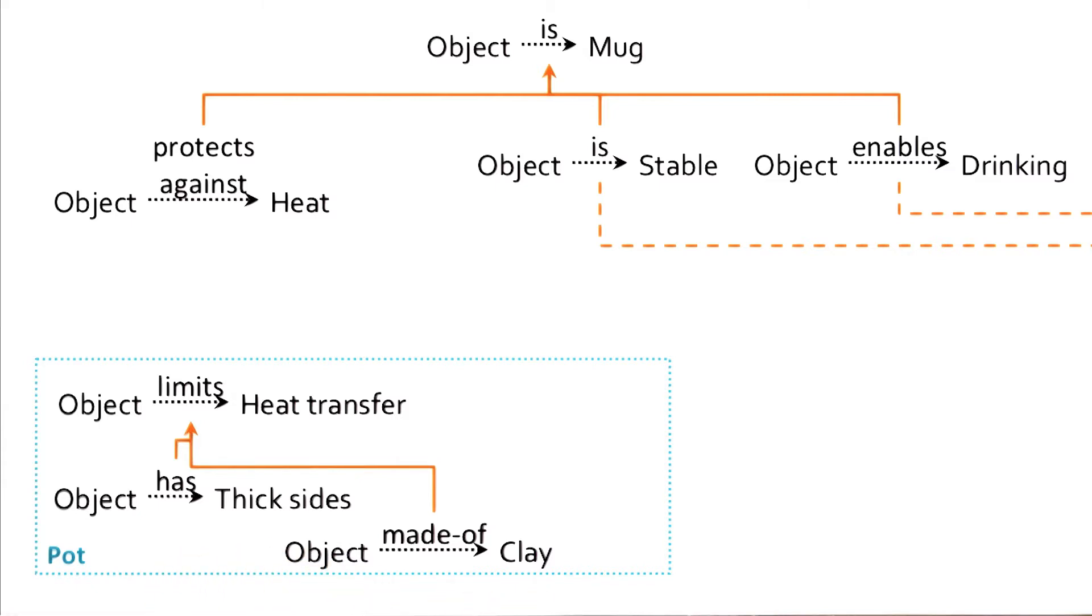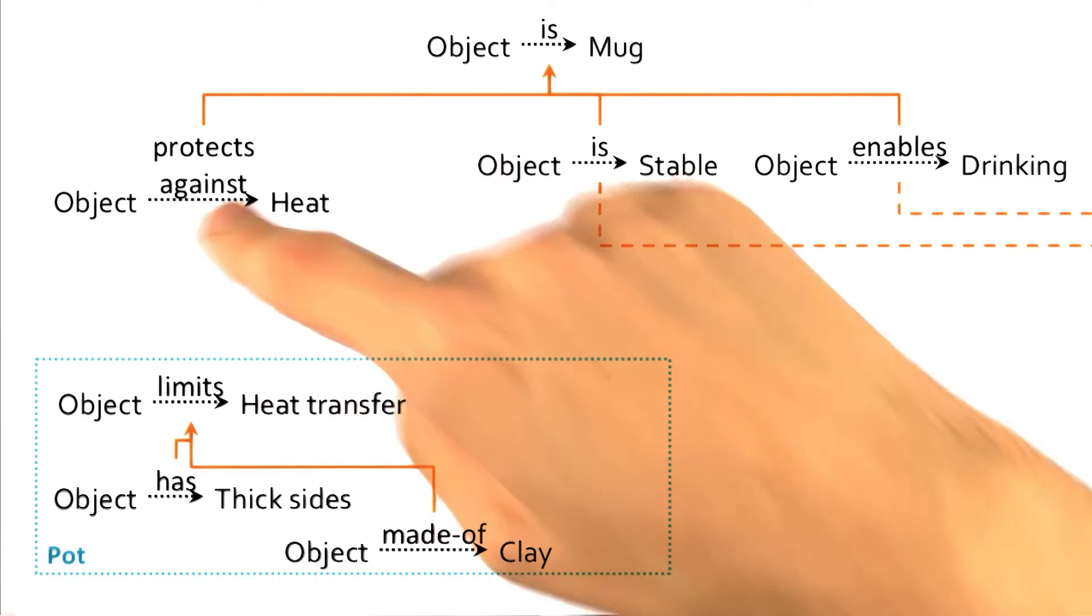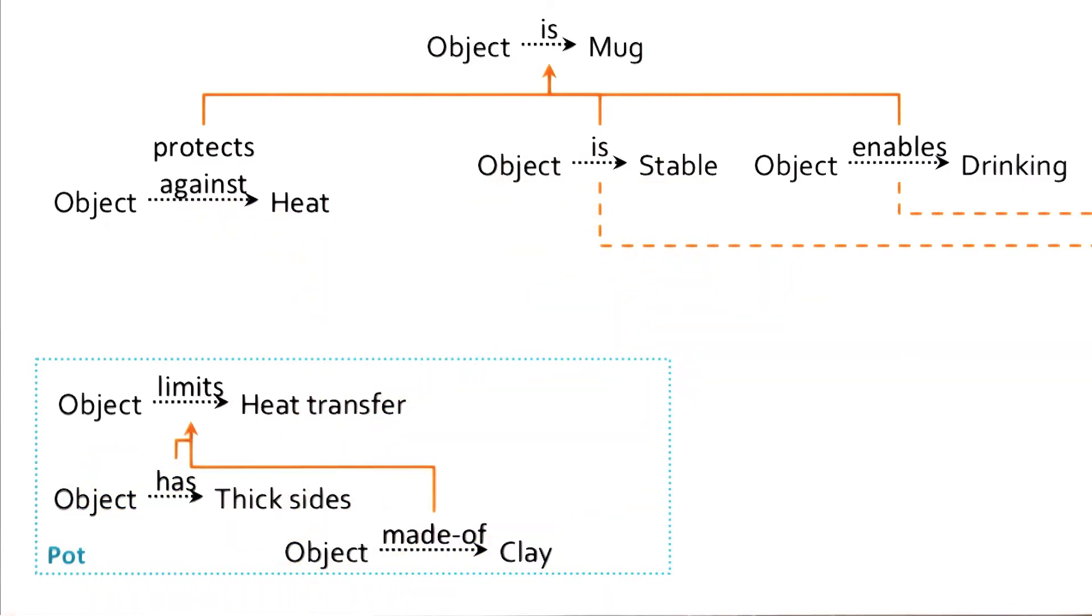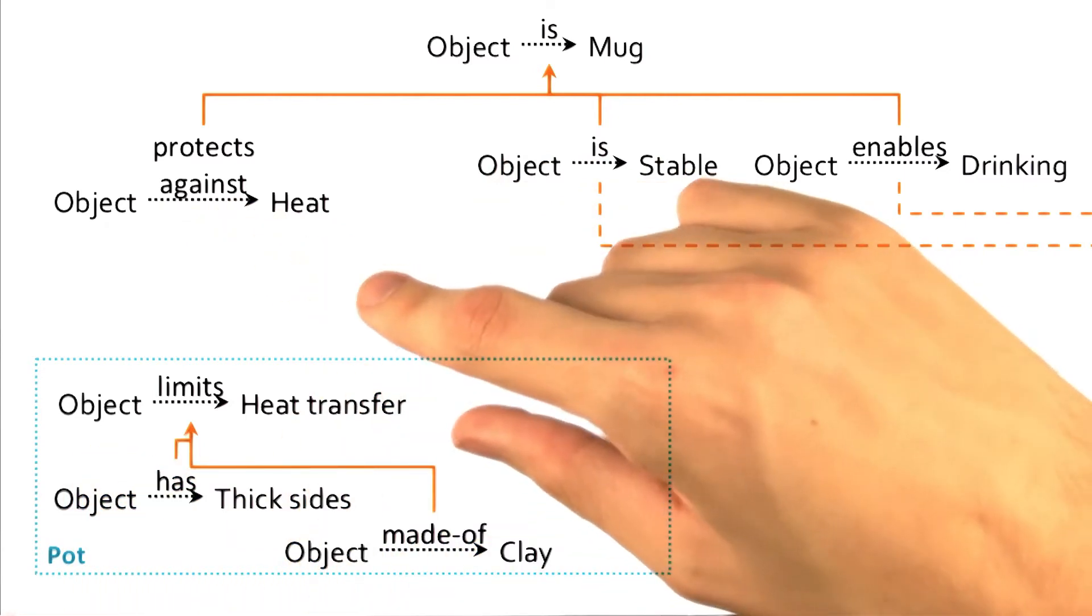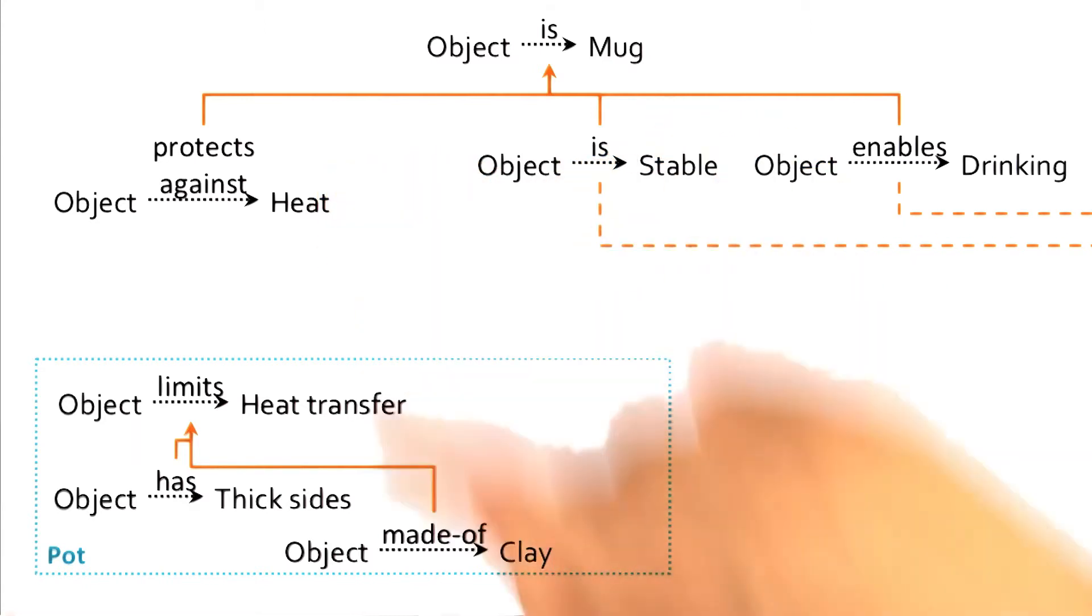So because we had everything else, we were able to easily prove that it's stable and it enables drinking. But what we can't do is we can't link protecting against heat to limiting heat transfer. Nothing in my definition of pot actually tells me that the fact that it limits heat transfer actually protects against heat.